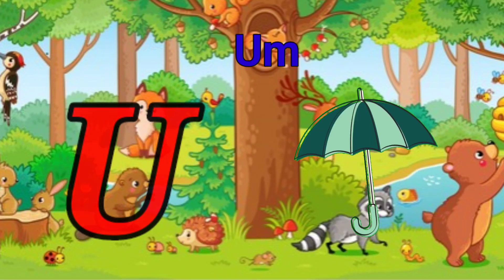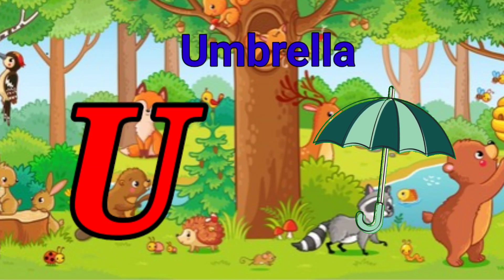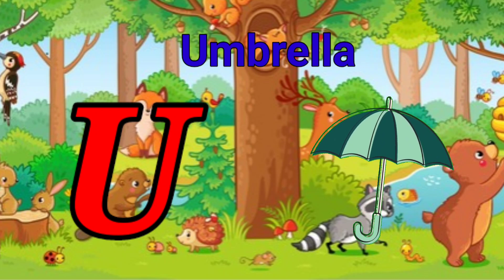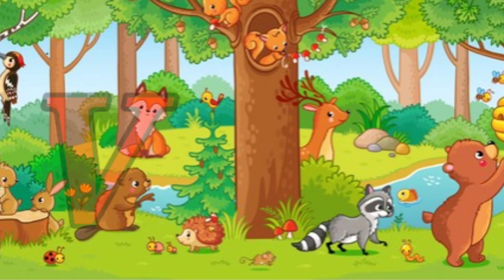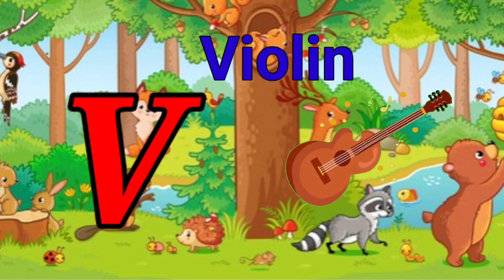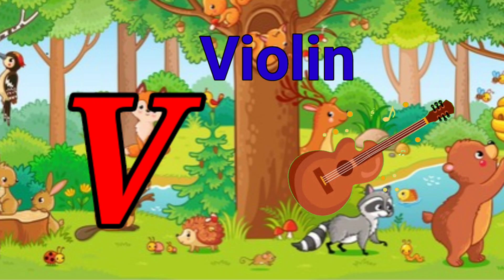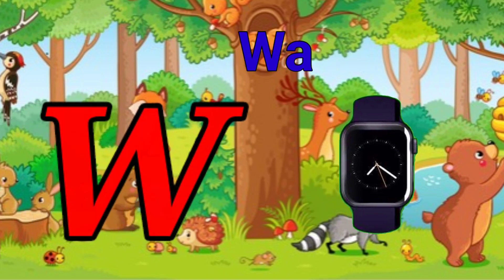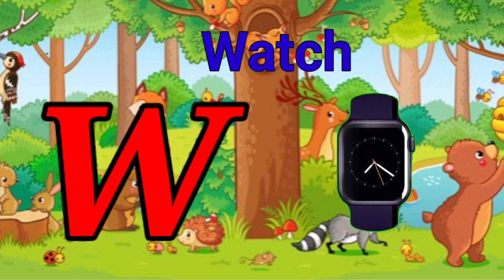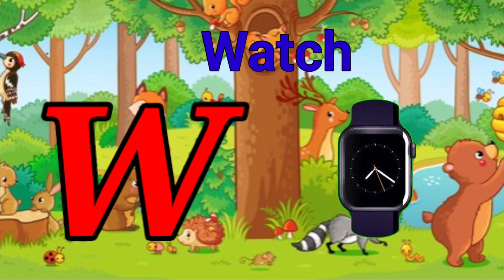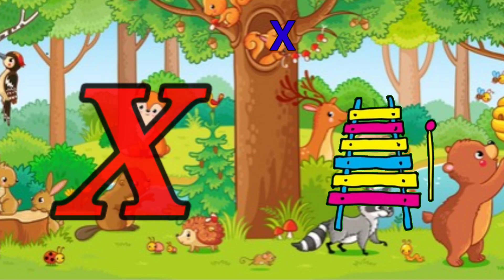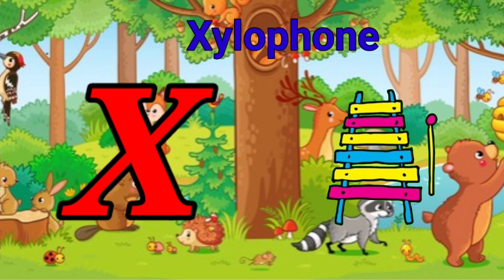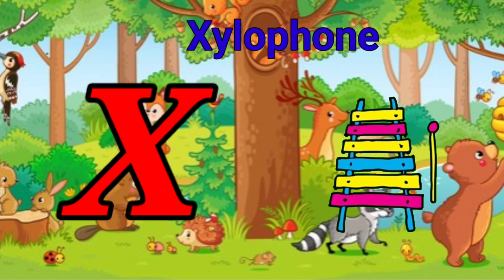U is for umbrella, u-u-umbrella. V is for violin, v-v-violin. W is for watch, w-w-watch. X is for xylophone, z-z-xylophone.